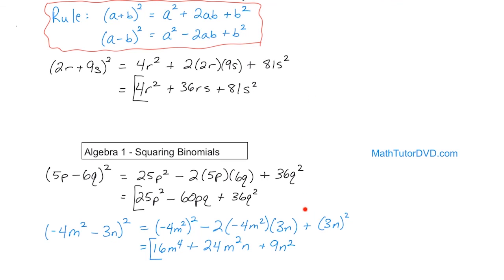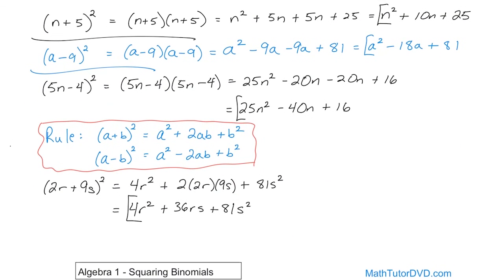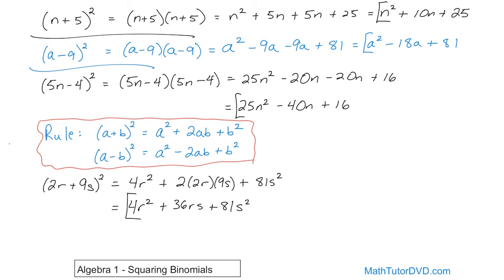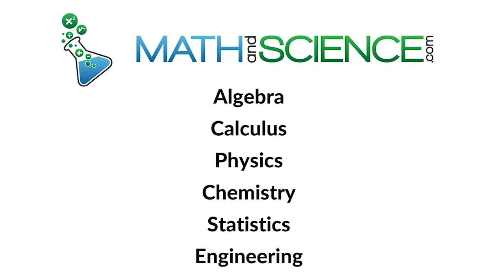If you forget what to do when you have a binomial squared, just write it down and multiply using FOIL — first, outside, inside, last — collect terms, and get the answer. Once you use this enough, you'll get comfortable with it. It's first term squared plus 2 times A times B plus the last term squared. Make sure you understand how to do this, apply it yourself, and get some practice. You can use it anytime you need to square a binomial. Follow me on to the next lesson — we'll talk about factoring trinomials, which is really important in algebra. Learn anything at mathandscience.com.